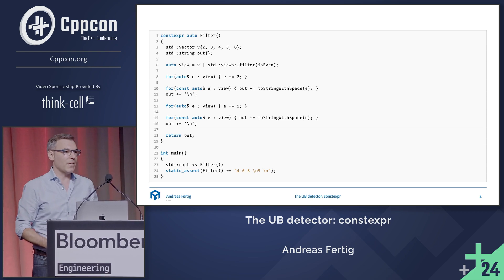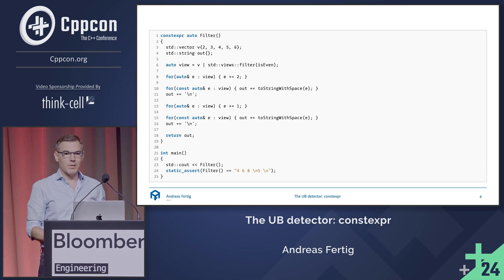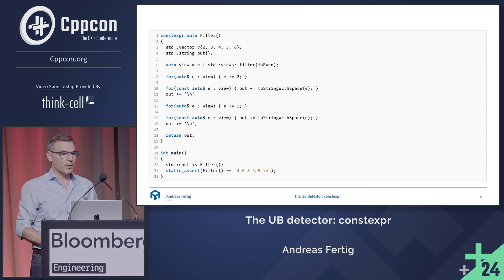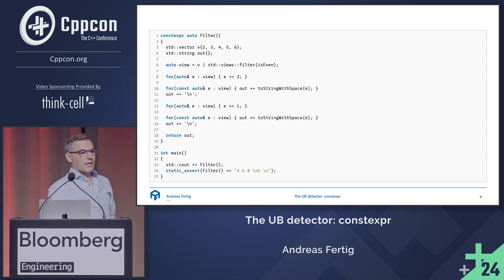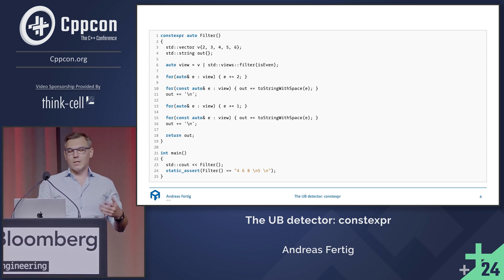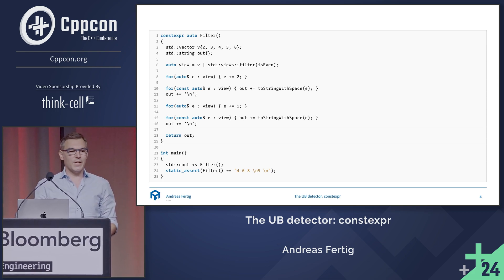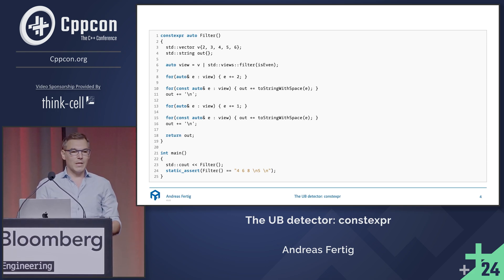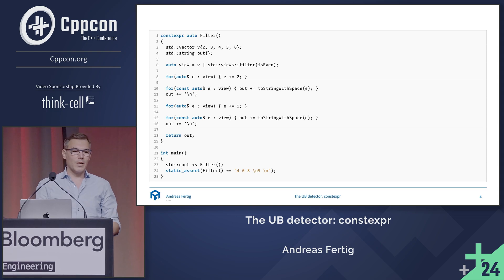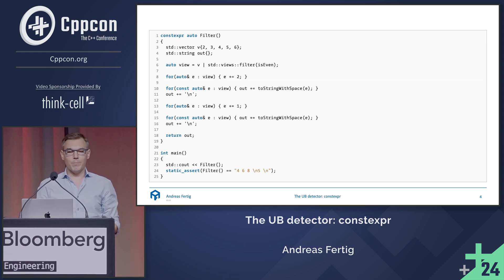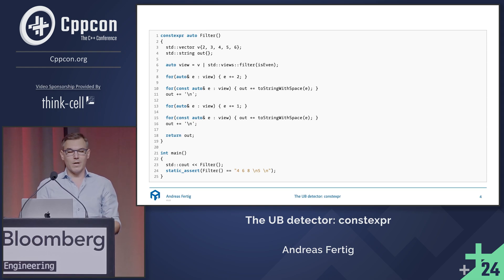It's C++20 — you might know it because it's the latest official C++ standard we have. ISO hasn't stamped C++23 yet. What you're looking at is a very simple function. It declares a std::vector with a couple of ints, declares a string buffer, and then uses a std::filter_view to filter out all the even numbers from the vector. I go over it with a range-based for loop once, adding plus two to every number — all the even numbers are still even.